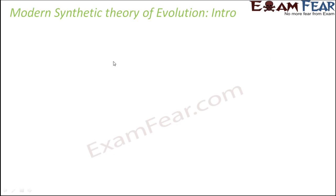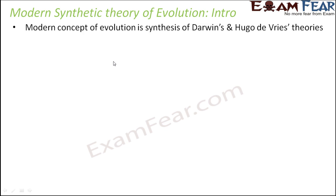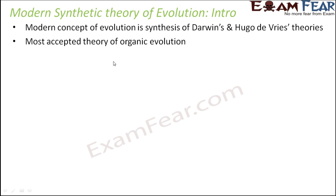Let us talk about the modern synthetic theory of evolution. This theory is the synthesis of Darwin's and Hugo de Vries theories. Since this theory is the most accepted theory of evolution, many different scientists had different views on evolution and came up with different laws and theories. The most accepted theory of organic evolution is the synthetic theory — we call it synthetic because it is a synthesis of multiple theories.